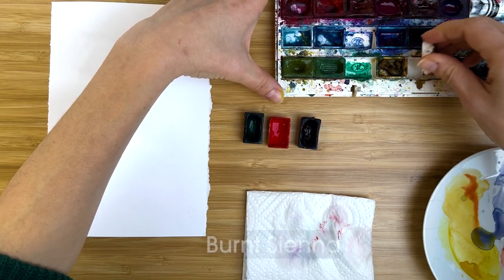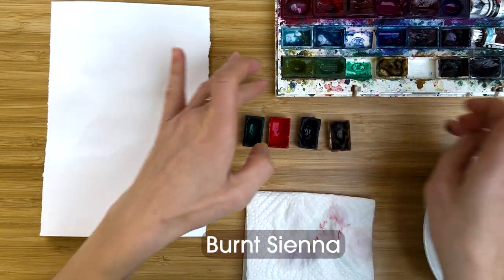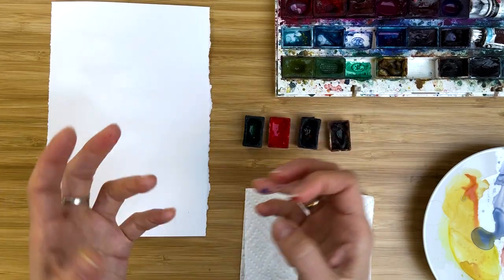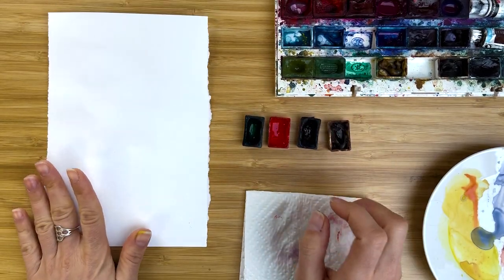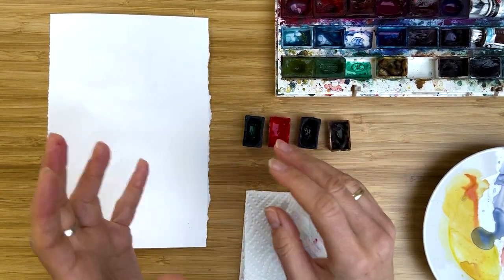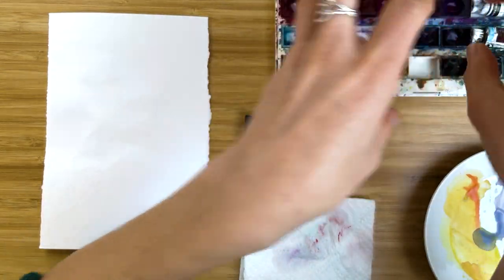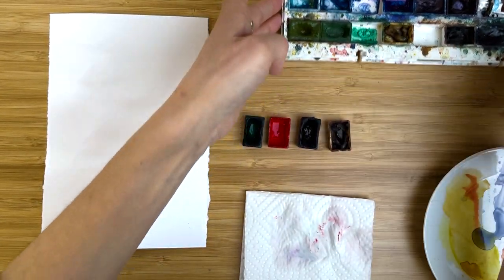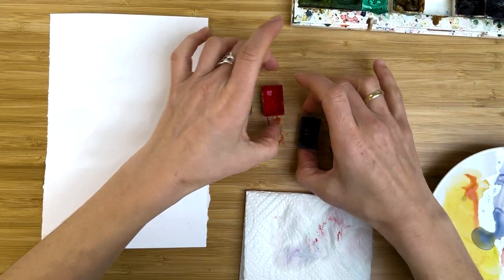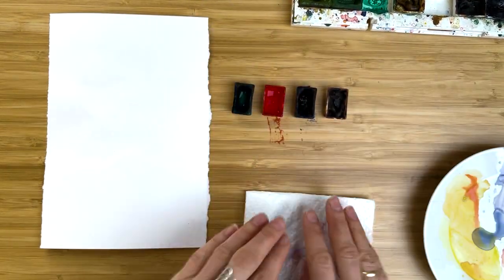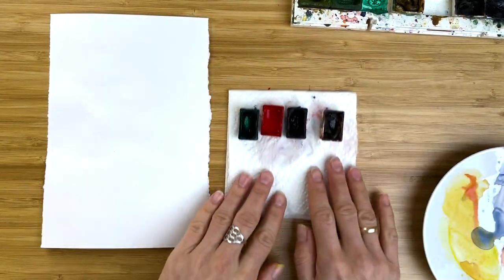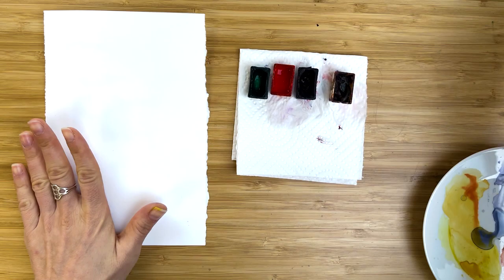So you watch a tutorial and artists recommend you, for example, four colors, or you decided to go with four colors, three colors, take them, physically take them out of the palette. It's very easy to do, usually. Put them aside on a piece of paper, preferably, and remove your big palette.